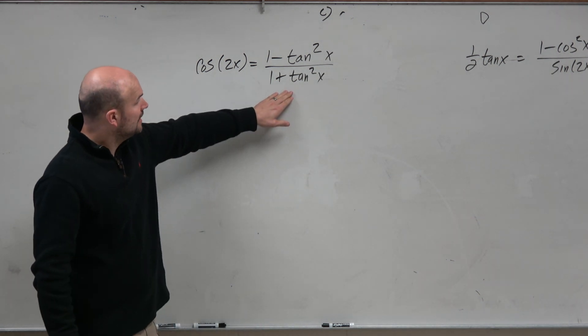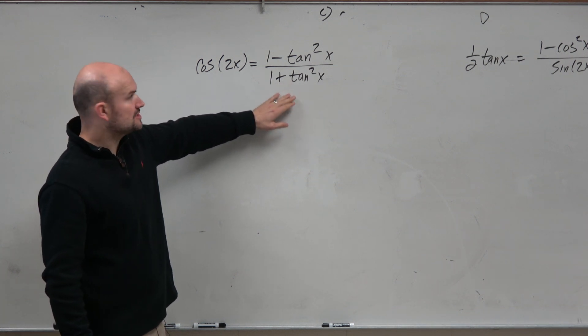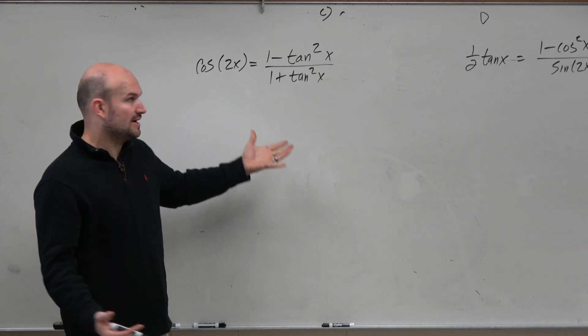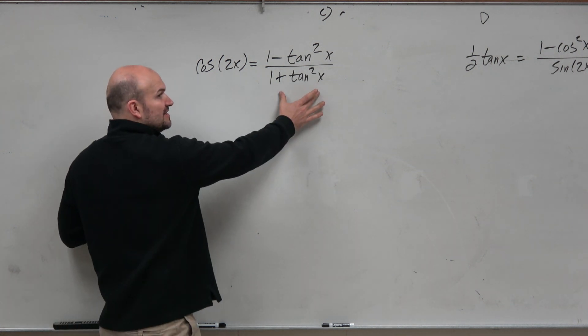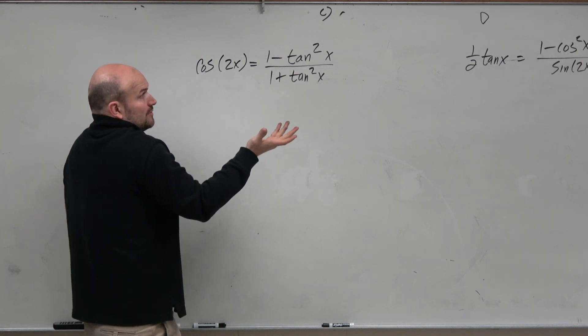For instance, here, I recognize that's the secant, right? So obviously, first of all, we want to pick the side. I think you guys would agree it's a lot easier to simplify this to make it look like that than it would be to expand that to make it look like that, right? So we'll pick this side and say, what can we do?